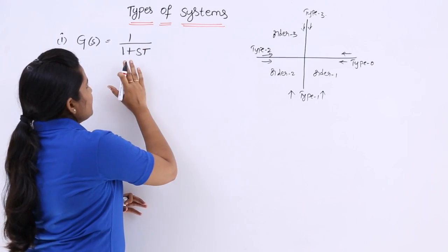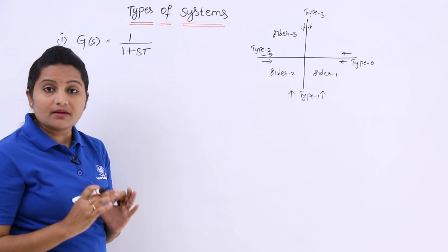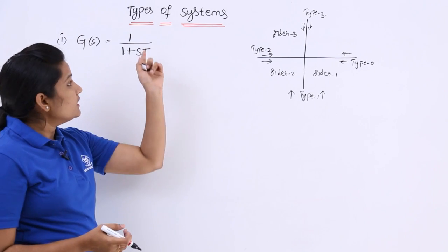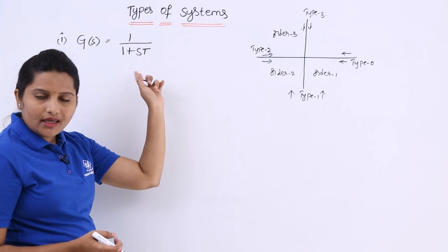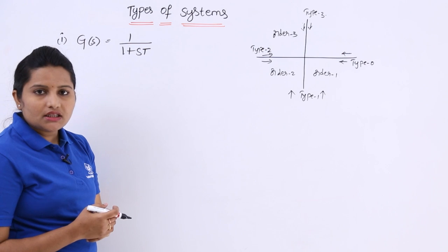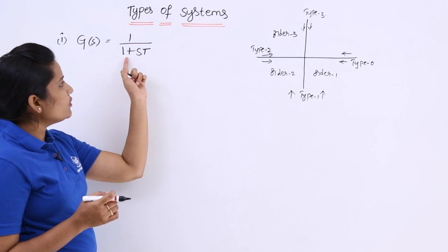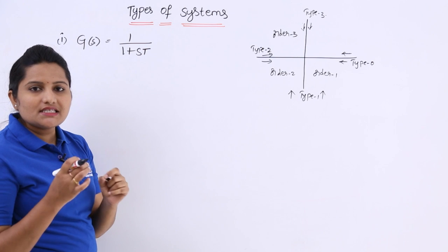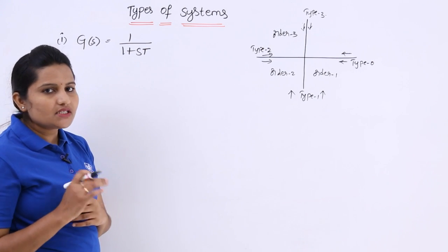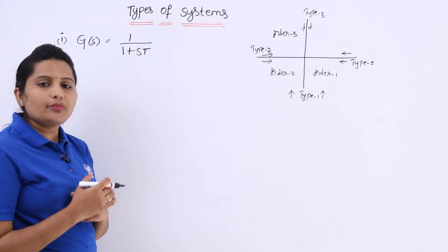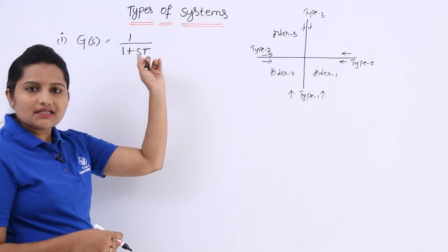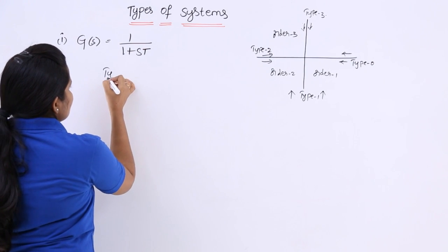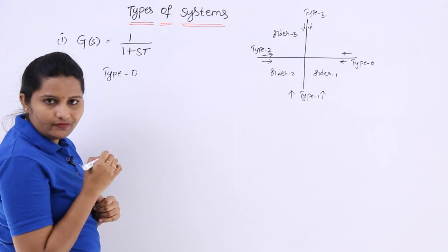Now observe this transfer function: G(s) = 1/(1+sT). Is there any pole at origin? In the denominator, can you observe any s term? No. That is why there is zero pole at origin. The pole is at s = -1/T, which is not at the origin. A pole at origin requires s = 0. As we have no poles at origin, this is a type 0 system.